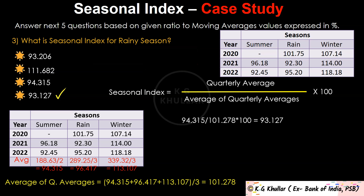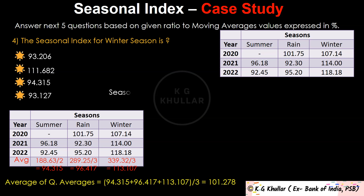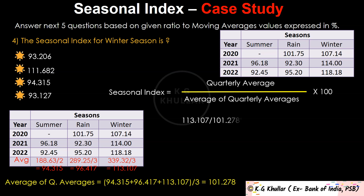The next question is: the seasonal index for winter season. We already found the quarterly average for winter season, which is 113.107, and the average of quarterly averages, which is 101.278. So the seasonal index for winter season is 113.107 divided by 101.278 multiplied by 100, which equals 111.682. The correct option is option B.